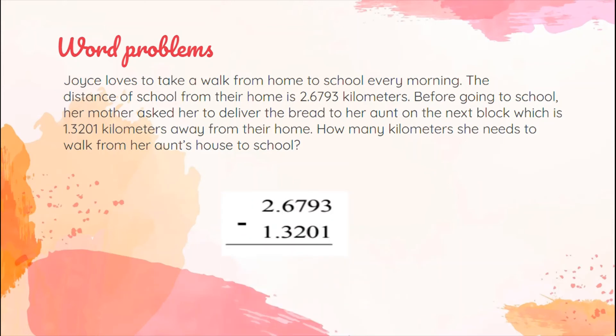For this instance, we are going to subtract the distance from their home to school. We have 2.6793 subtracted by 1.3201. Now let's subtract. Let's start with the number on the right. 3 minus 1, we have 2. 9 minus 0, 9. 7 minus 2, that is 5. 6 minus 3, the answer is 3.